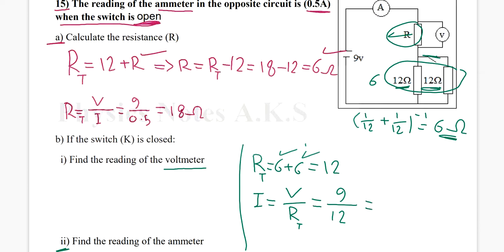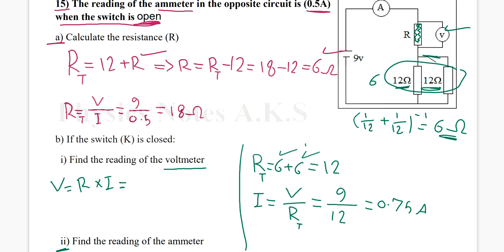That gives 0.75 ampere. Going back to the main question — find the reading of the voltmeter, which is the voltage across resistor R. V equals R multiplied by I. Since R is connected in series with the battery, it carries the full circuit current, so V equals 6 multiplied by 0.75.